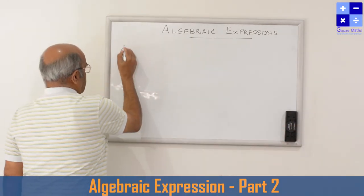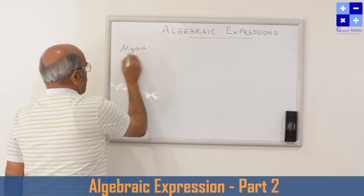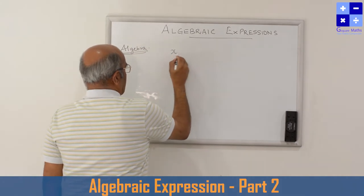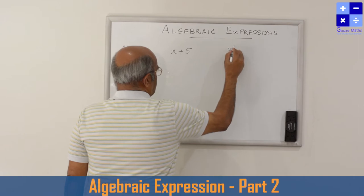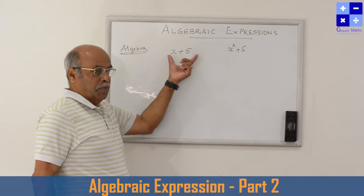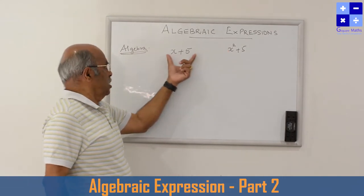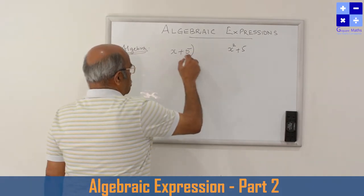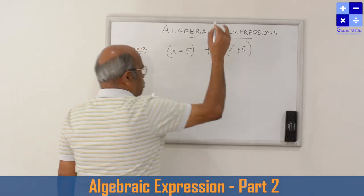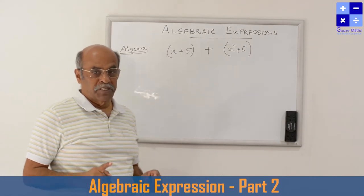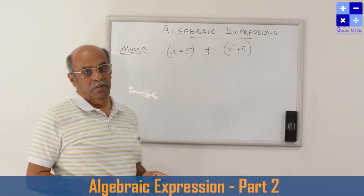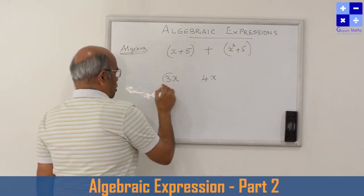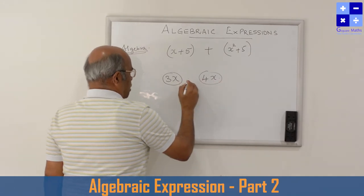Now let us look at the algebra of algebraic expressions — how to add and subtract them. For example, take two expressions: x plus 5, which is a binomial, and x squared plus 5, also a binomial. We need to add these two. While adding two algebraic expressions, only like terms can be added. For example, 3x and 4x are like terms because both have the variable x, so 3x plus 4x equals 7x.